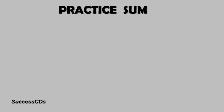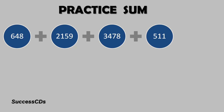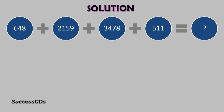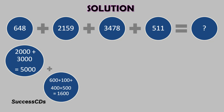Here is a sum for your practice: 648 plus 2159 plus 3478 plus 511. You can do it and then go ahead and see the answer. The solution: first of all, add the thousands place numbers — there are only two: 2000 plus 3000, which gives us 5000. So you can just write down 5000 on the paper. Then go ahead to the hundreds place numbers.